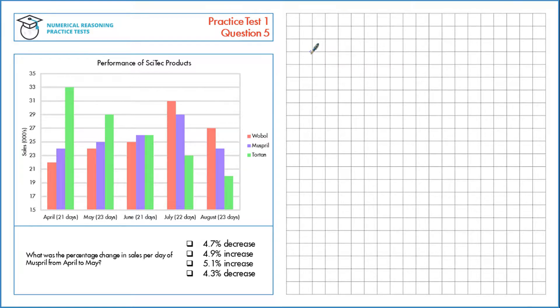What was the percentage change in sales per day of Muspril from April to May? We're looking at Muspril here, which is in blue, and we need to find the sales for April first.